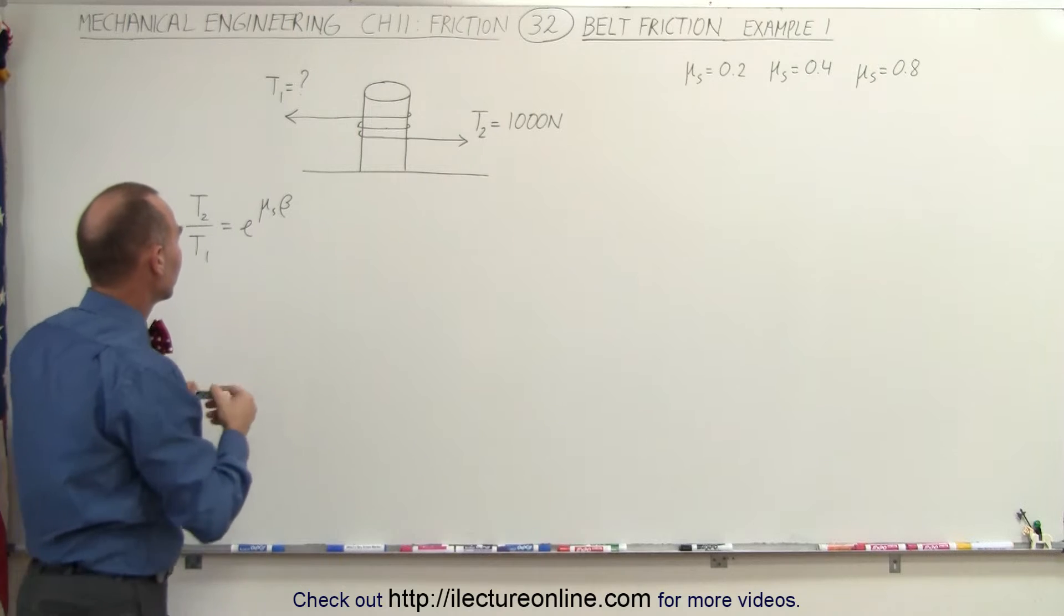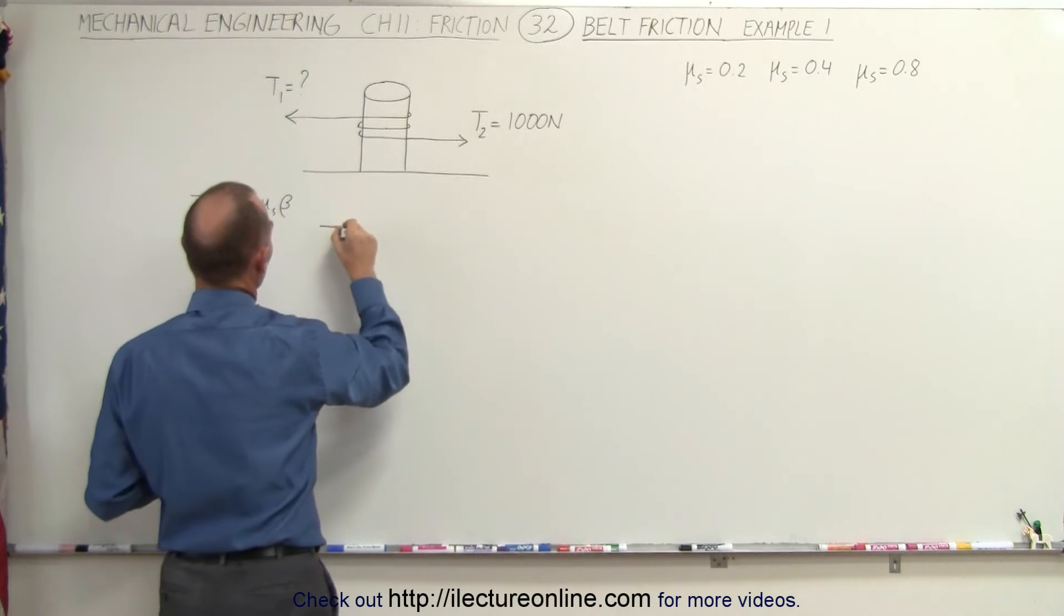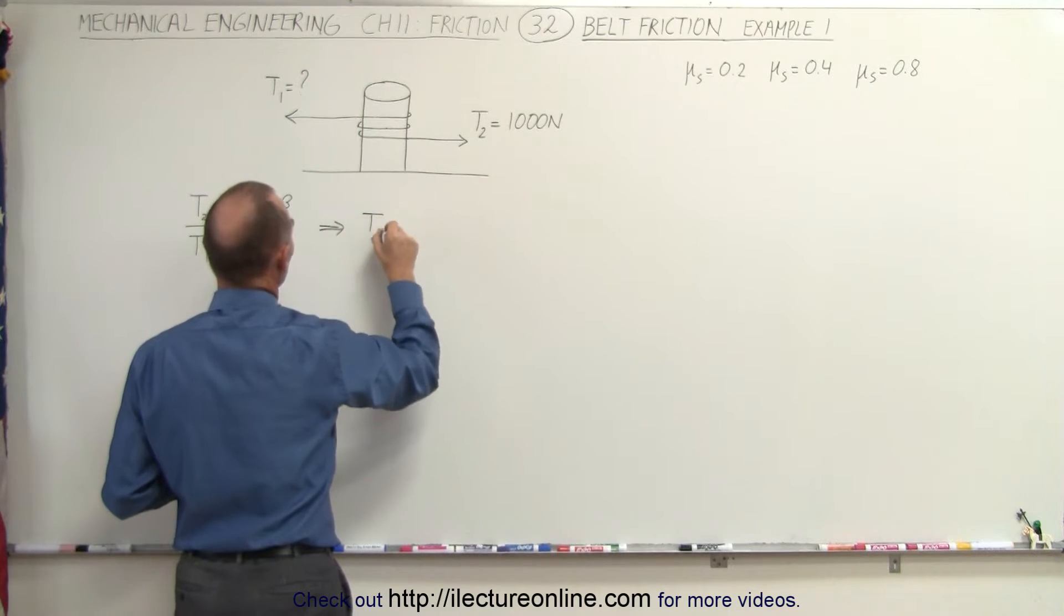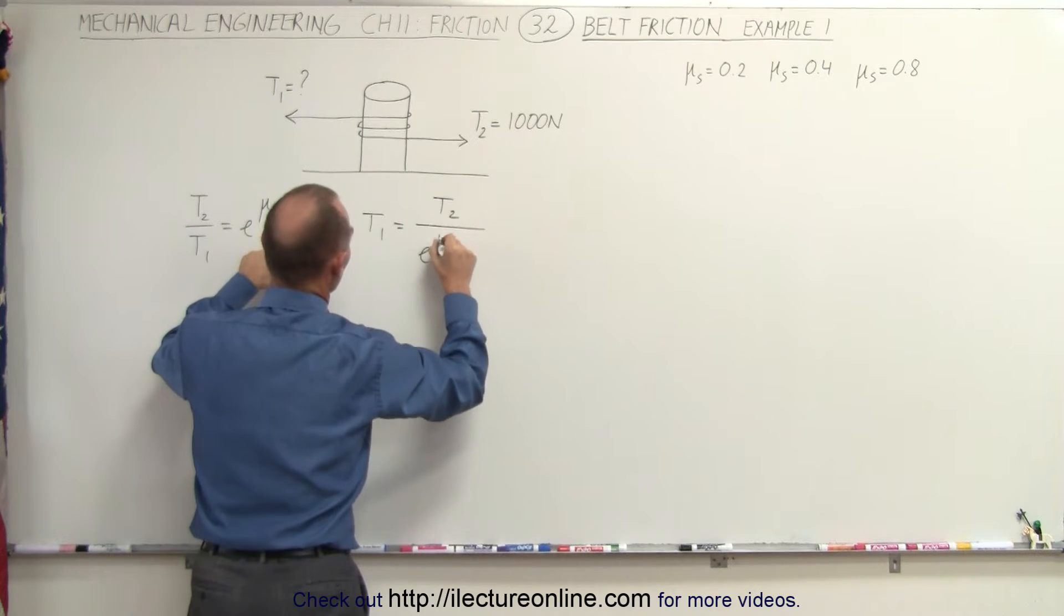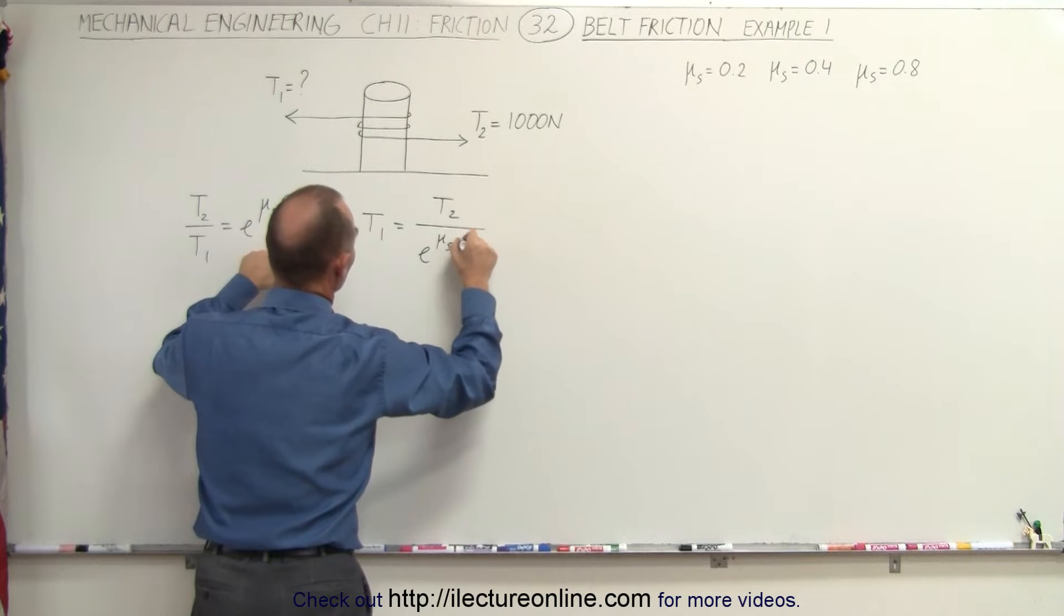Now we're looking for T1, so this equation can now be solved for T1. We say that T1 is equal to T2 divided by e to the μₛ times β.